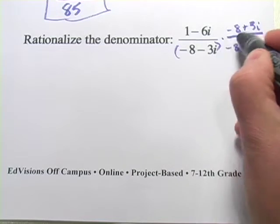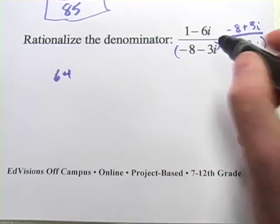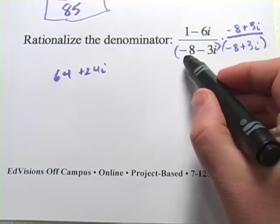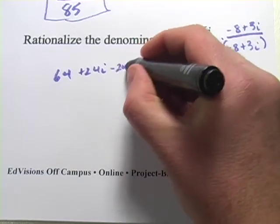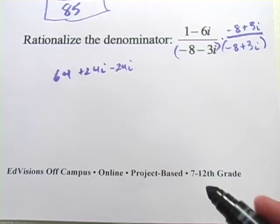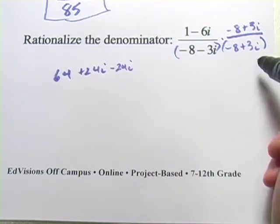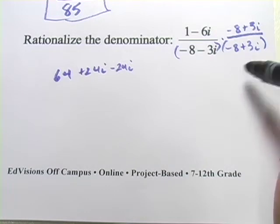Let's FOIL out the bottom first. Negative 8 times negative 8 is 64. Negative 3i times negative 8 is plus 24i. Negative 8 times 3i is minus 24i. And as you get used to these, you can probably just skip that step because you know the i terms are going to disappear if you're multiplying by the conjugate.